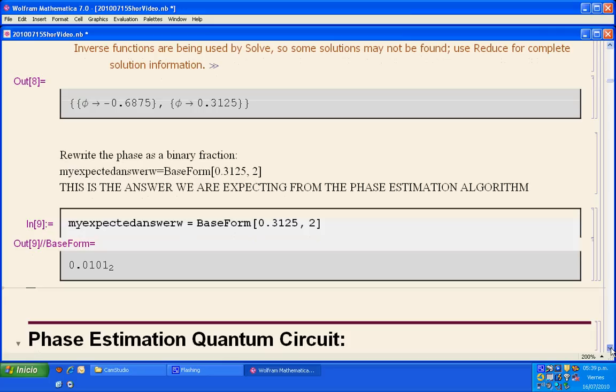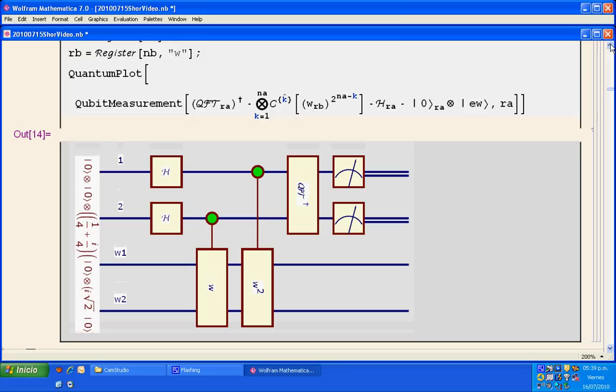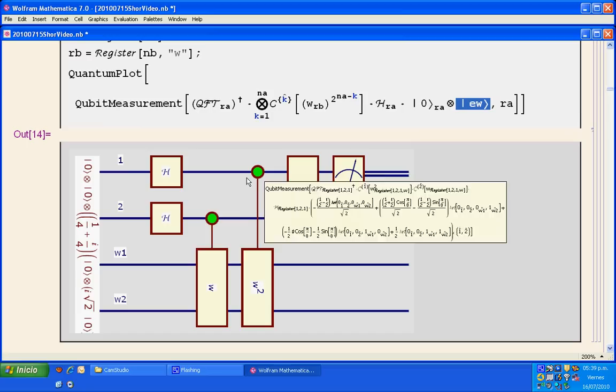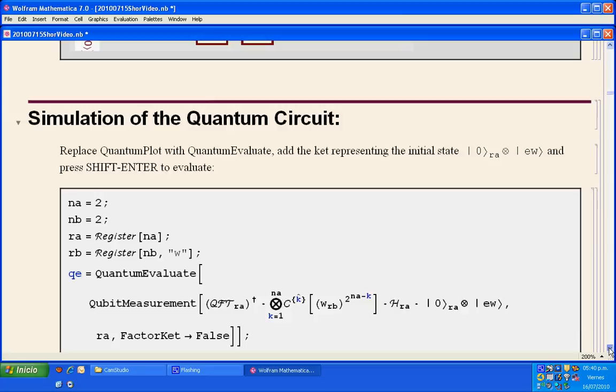This is now the circuit that is going to be used. That circuit will have as an input the eigenstate. Here you can see it. We have Hadamard gates, inverse Fourier transform, some measurements, and we're going to have only two bits to represent the phase which actually was four bits, so it's going to be an approximated answer.